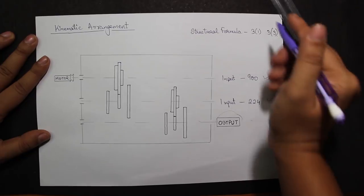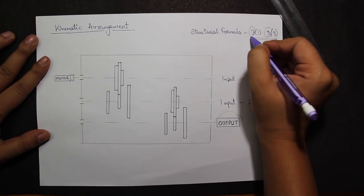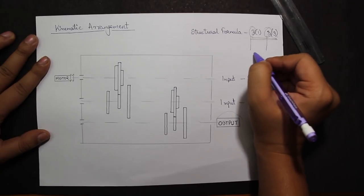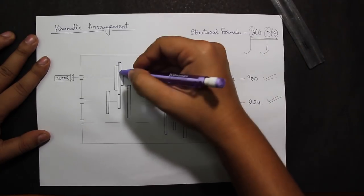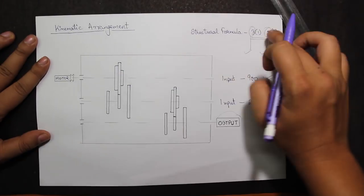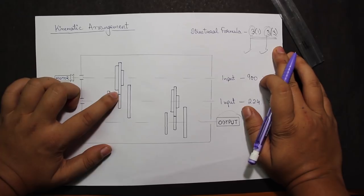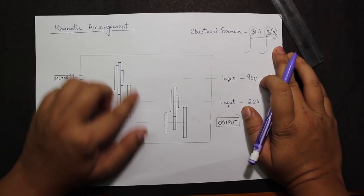As I know from the structural formula, I have 3(1) and 3(3). Looking at the number outside the bracket, I have to make three pair combinations two times, one for this and second for this part. So the combination would look like this for the input speed 900 connected to the motor.